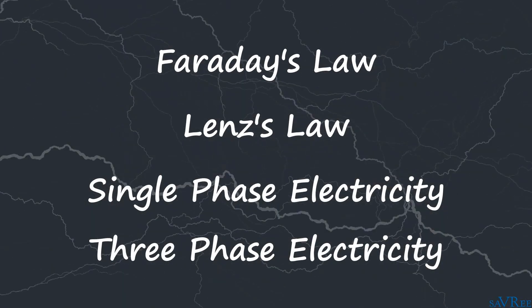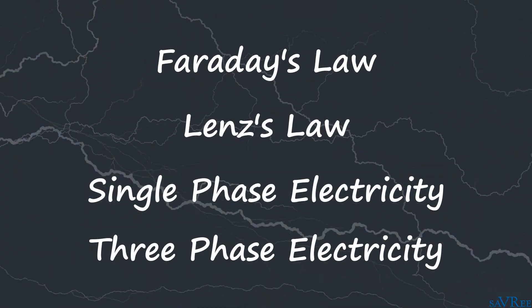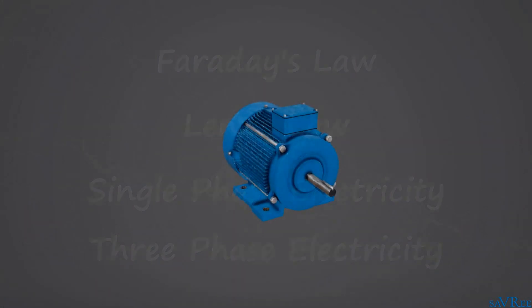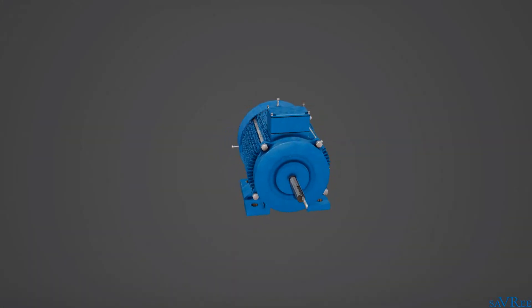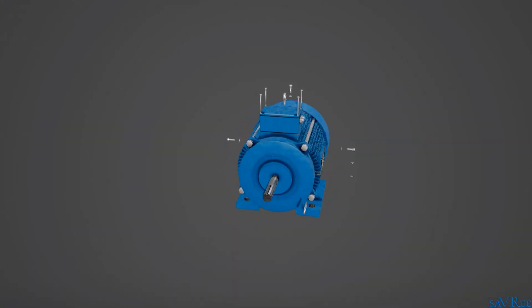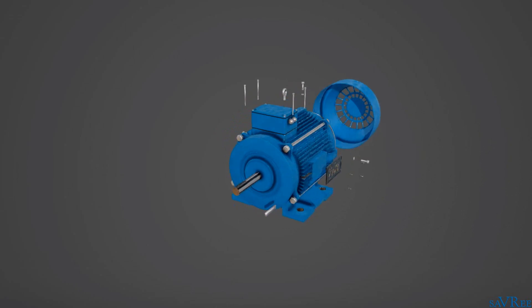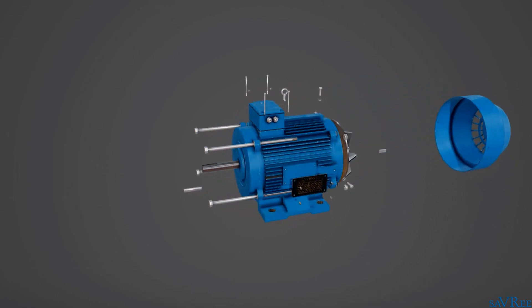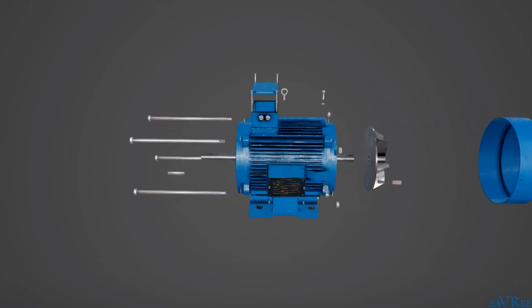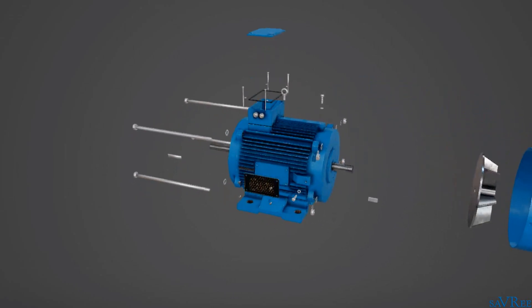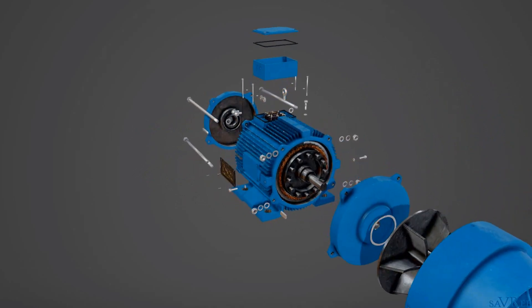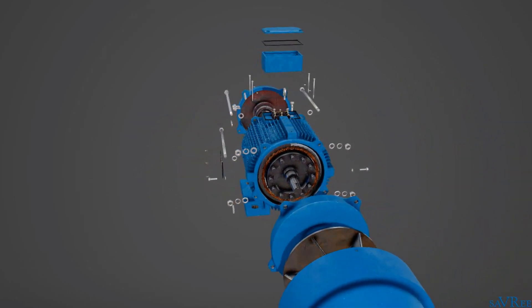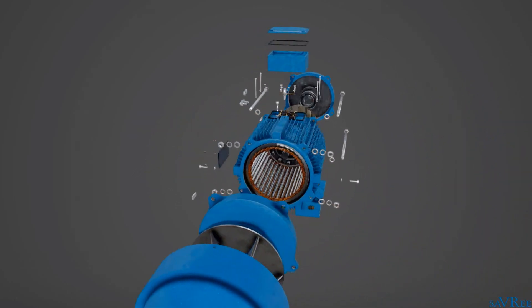And then we'll take a look at the main parts that make up an induction motor. These include the frame, end bells, stator, rotor, bearings, fan, terminal box, and even thermal protection.